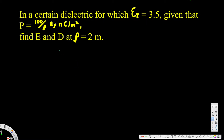Let's look at this problem. The question is: in a certain dielectric for which epsilon_r is equal to 3.5, given that P is equal to 100 over rho a_rho nanocoulombs per meter squared, find E and D at rho equal to 2 meters.